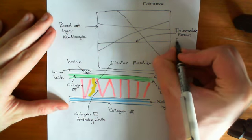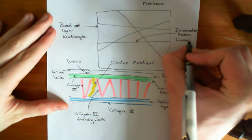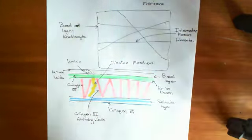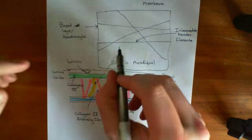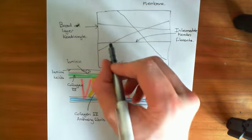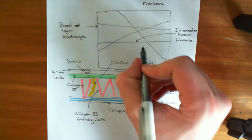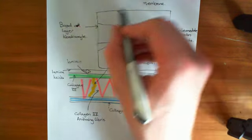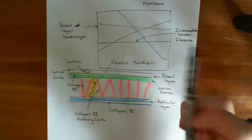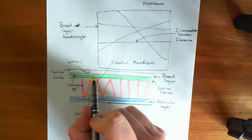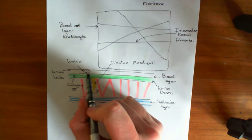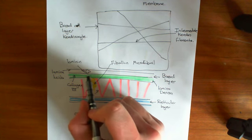One of the main cytoskeletal components are keratin filaments. Keratin is a cytoskeletal component that holds the cell together. And the hemidesmosome is basically going to be a link between this intermediate keratin filament, which forms the cytoskeleton, and specifically the laminins of this basement membrane.